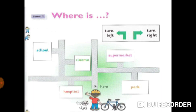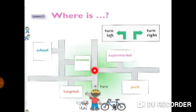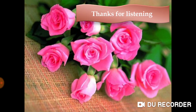Where is the supermarket? Let's give him the directions: go forward, turn right, then turn left. Now where is the park? Go forward, turn right, then turn right.